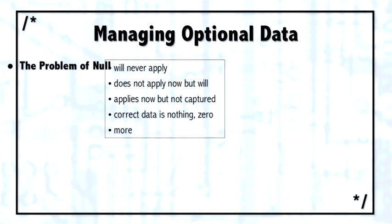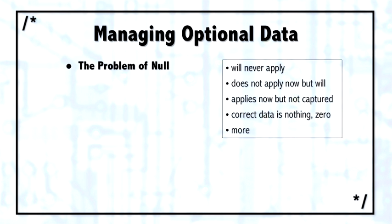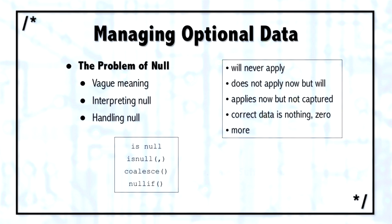One controversy in the database world is how to handle nulls — how to handle optional data. Some database developers use nulls like they're going out of style. Other database modelers never, ever use null, feeling that nulls are a lazy man's way of cheating in the database. And these are very emotional feelings people have about null.